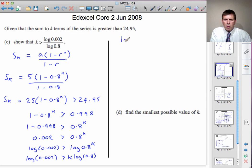So log of 0.002 divided by the log of 0.8 will be less than k. And that's, in effect, what we were asked to show.